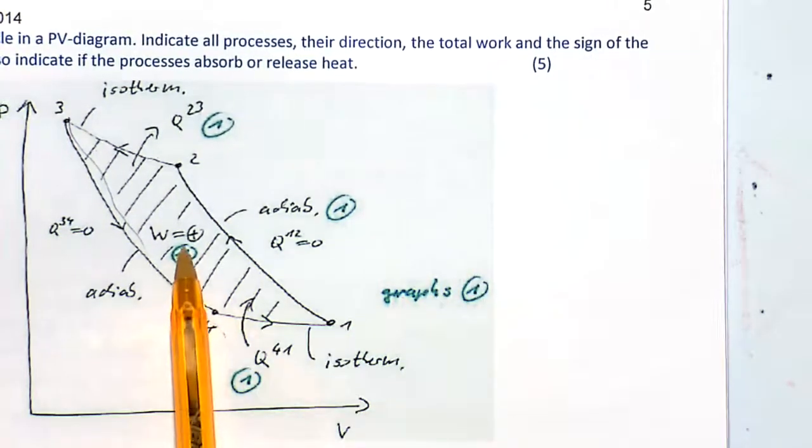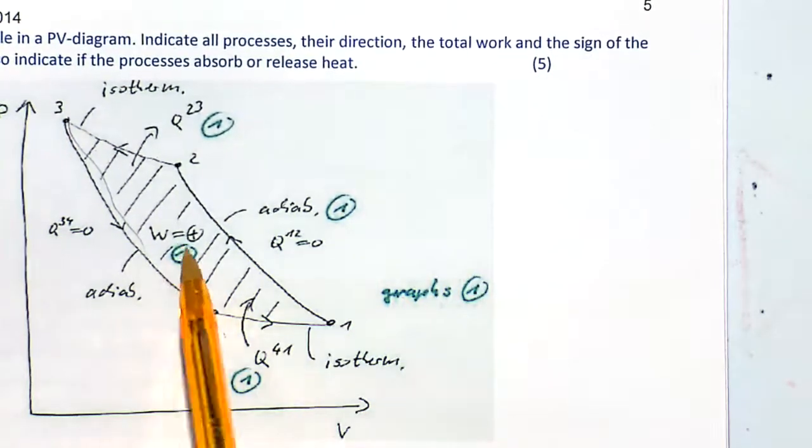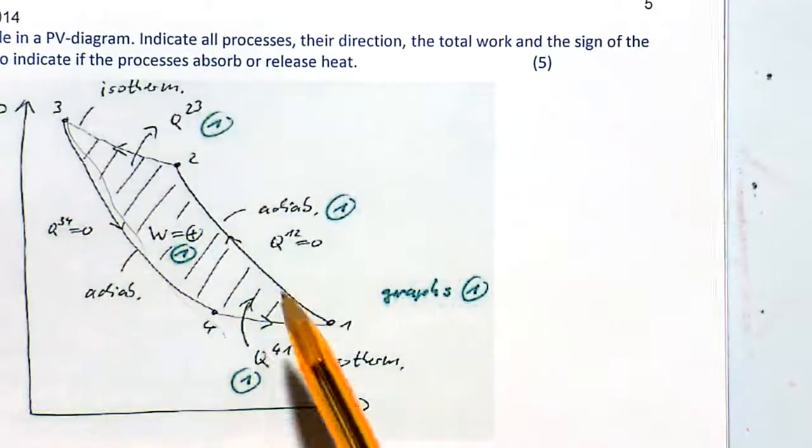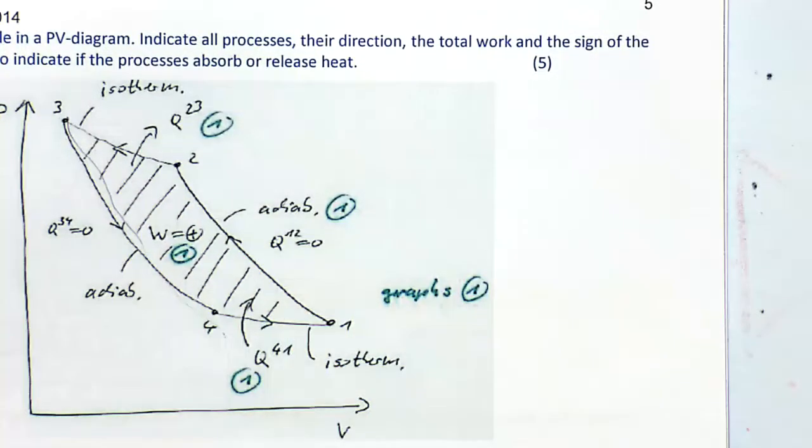Work done is positive. The cycle consists of: isothermal, adiabatic, adiabatic, isothermal.